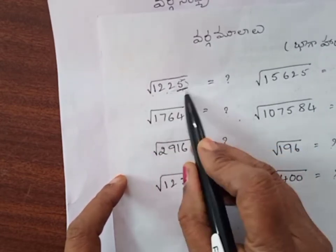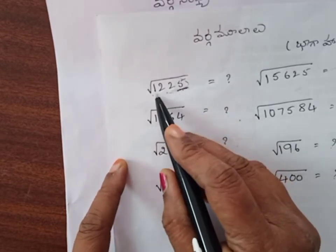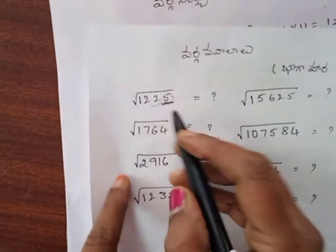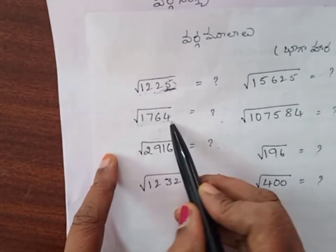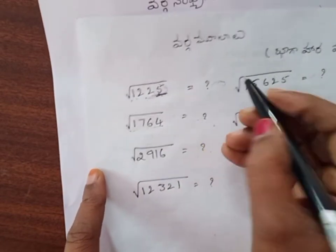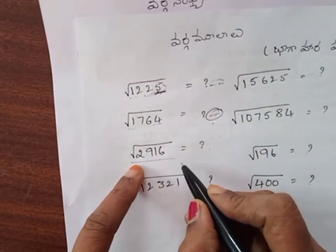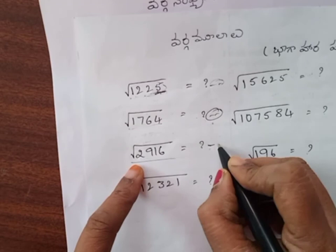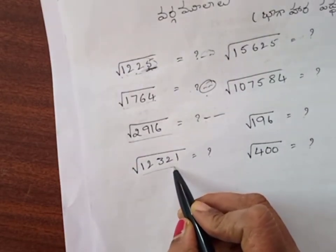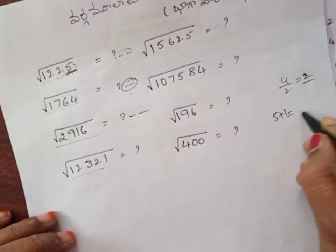This is the first one. We will have 4 of them — 4 by 2. We will have 5 of them. 5 plus 1 is 6.